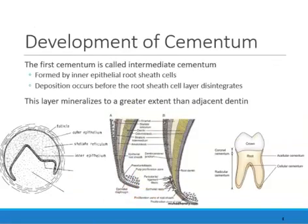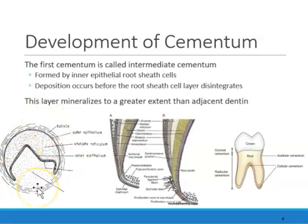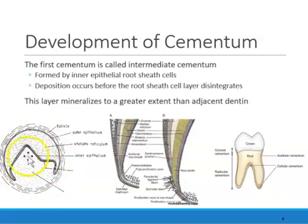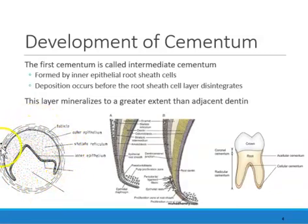So how does cementum occur? Cementogenesis — the formation of cementum. This diagram shows a tooth germ. Remember this is your enamel organ, these are your mesenchymal cells, also the dental papilla, which makes the pulp and the dentin. And then all around this we have a dental sac or dental follicle.